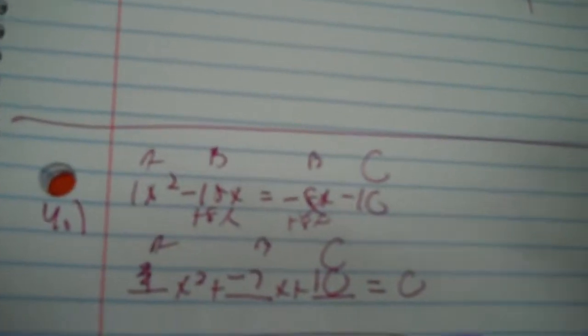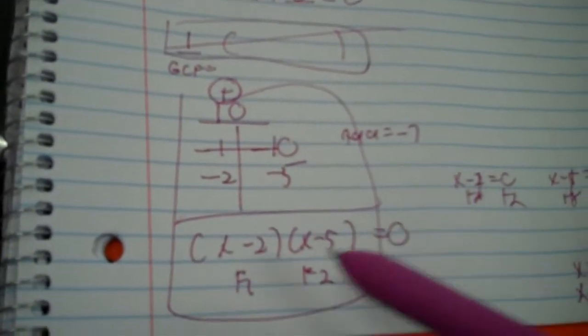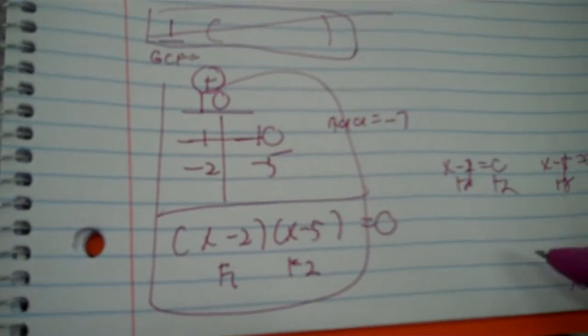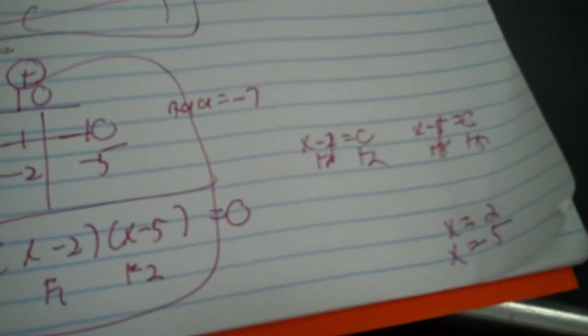Here's how to enter your answers for the four problems on assignment number two. So this is an example — let's say that was number four. I did everything, got it equal to zero with the A, B, C, 8, 10, all that — F1, F2 — plus two, plus two, I get two and five.